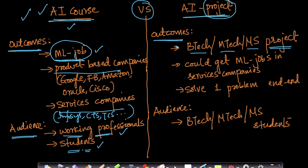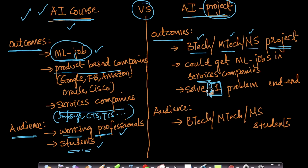At the end of the AI project you could get machine learning jobs in services companies, because you do learn a lot of machine learning — but not as much as what you would learn in the AI course. In the Applied AI project we take one problem and solve it end-to-end, because typically in your bachelor's or master's final year project you take one problem and solve it end-to-end.